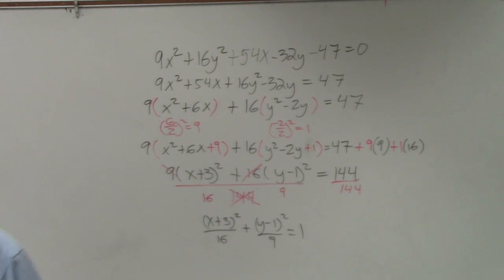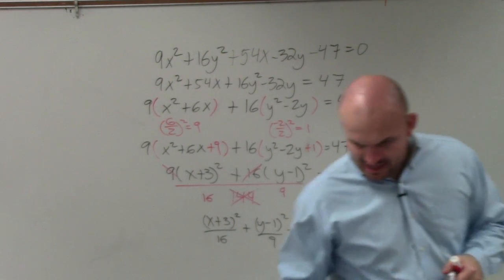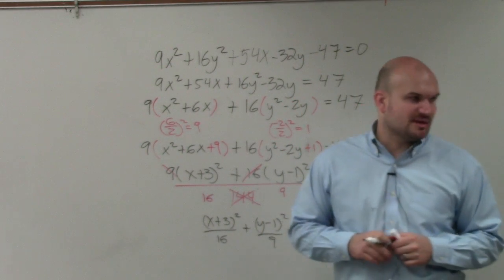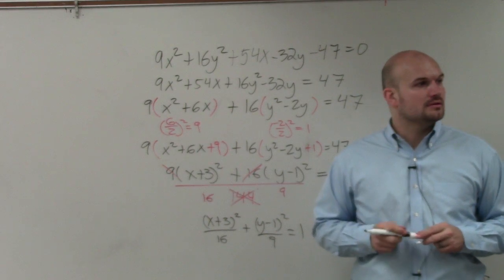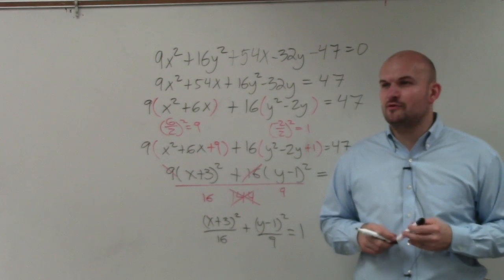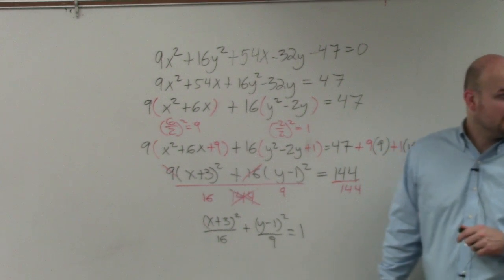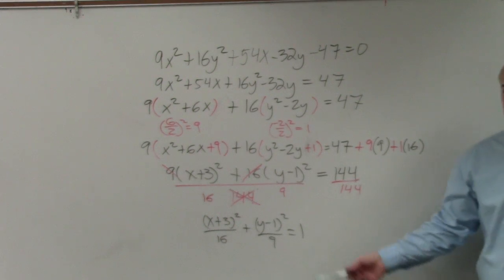So now I have x plus 3 squared over 16 plus y minus 1 squared over 9 equals 1. Does everybody see how I wrote that, what I did there? Because I'm not done yet. Because I believe it also asked you to find the vertices, foci, eccentricity we haven't talked about yet. We did kind of talk about eccentricity. I didn't give you a formula, though. Is everybody OK with this before I move on? Everybody's OK?